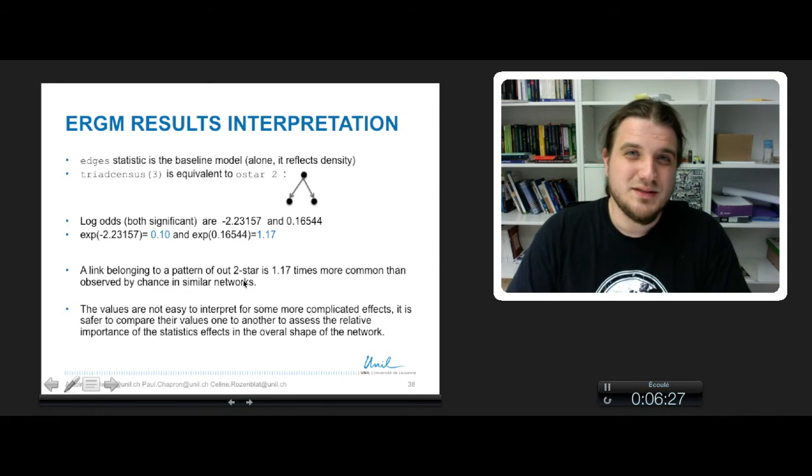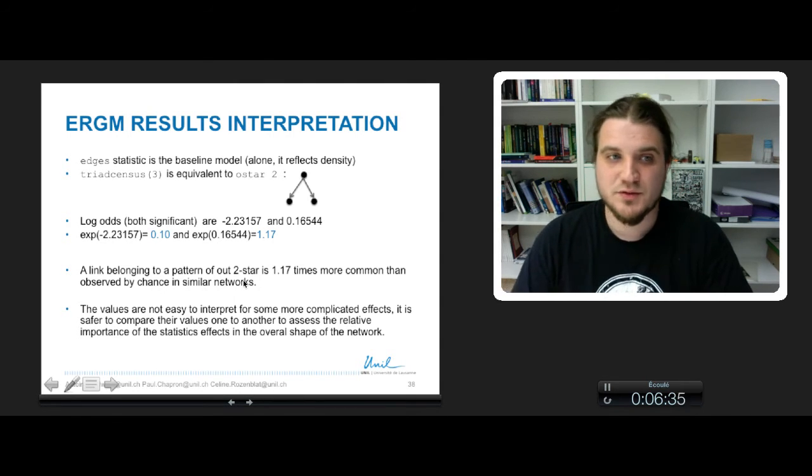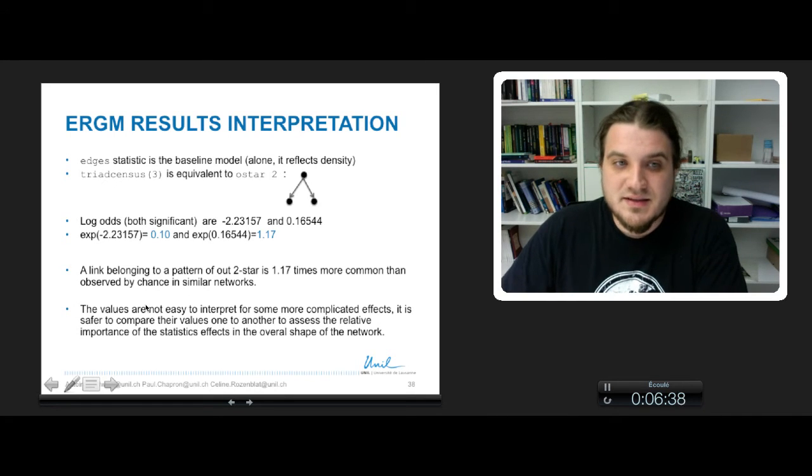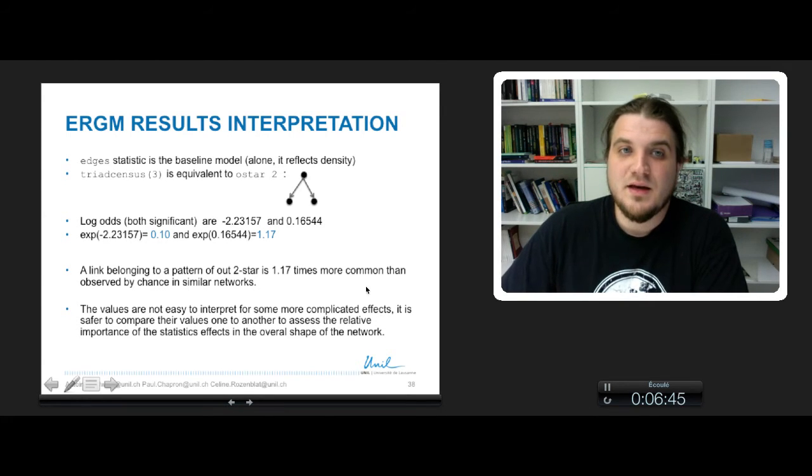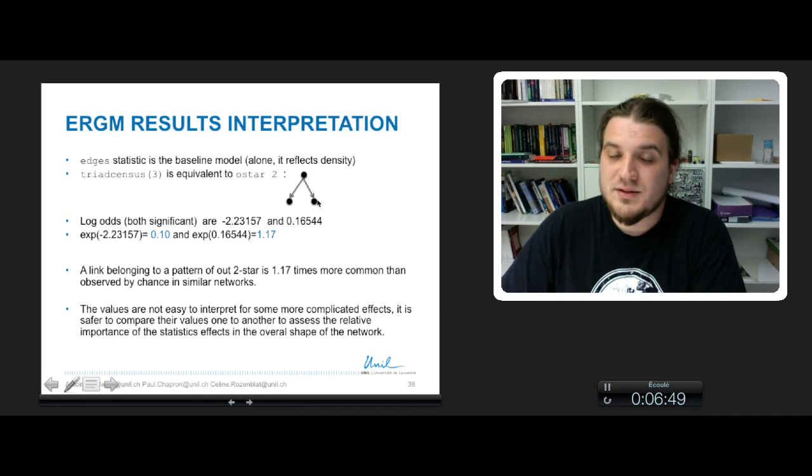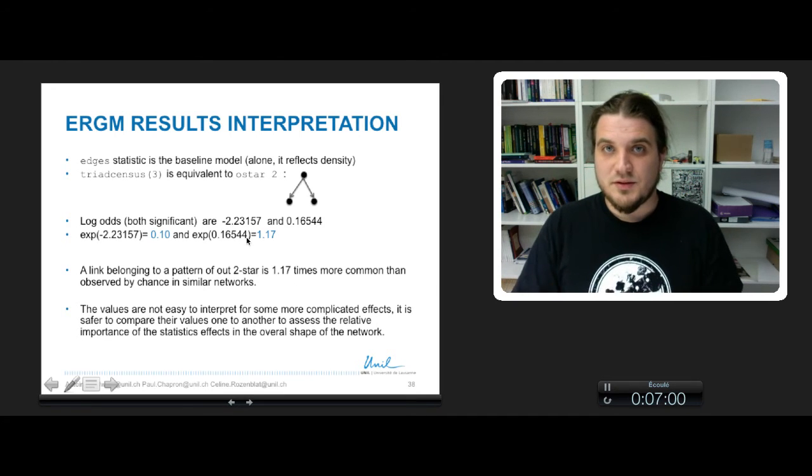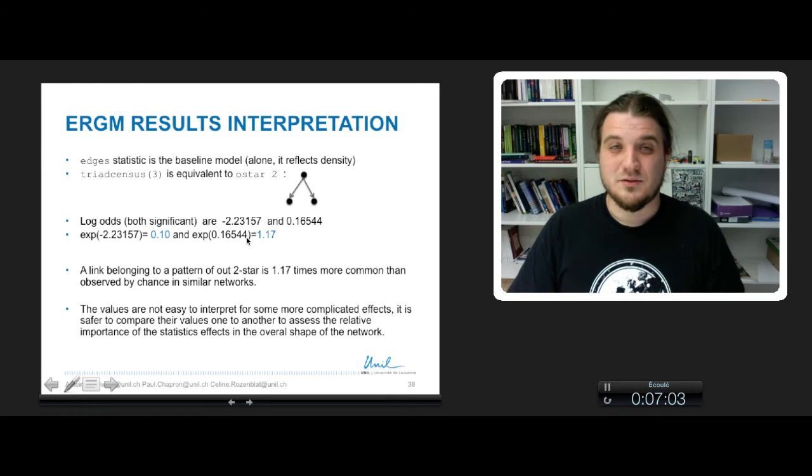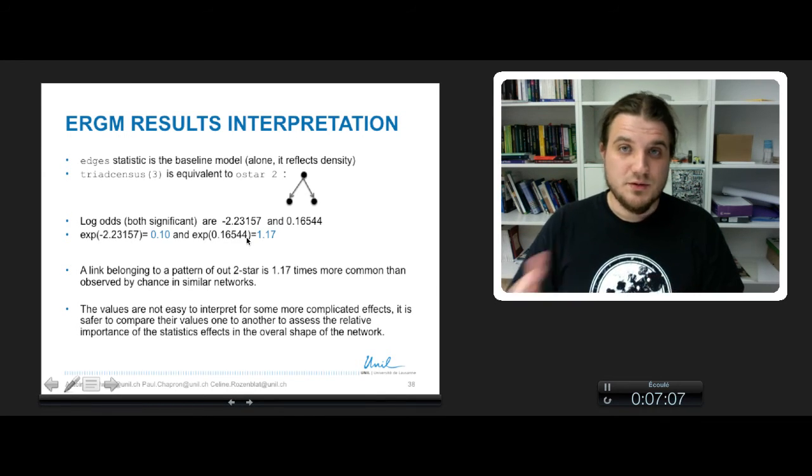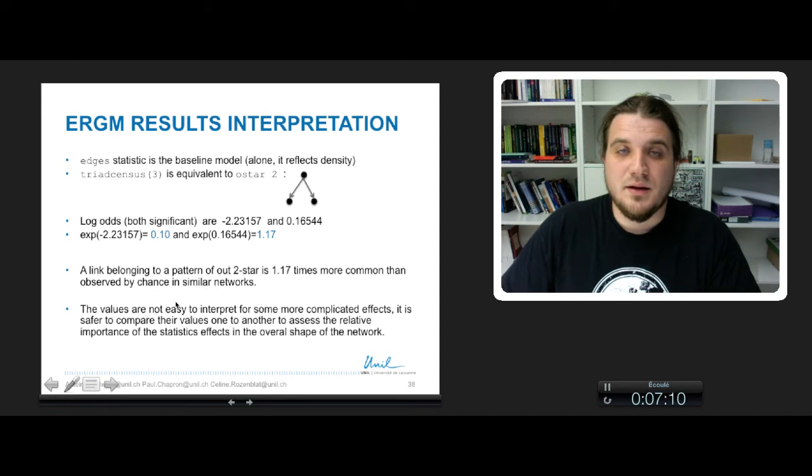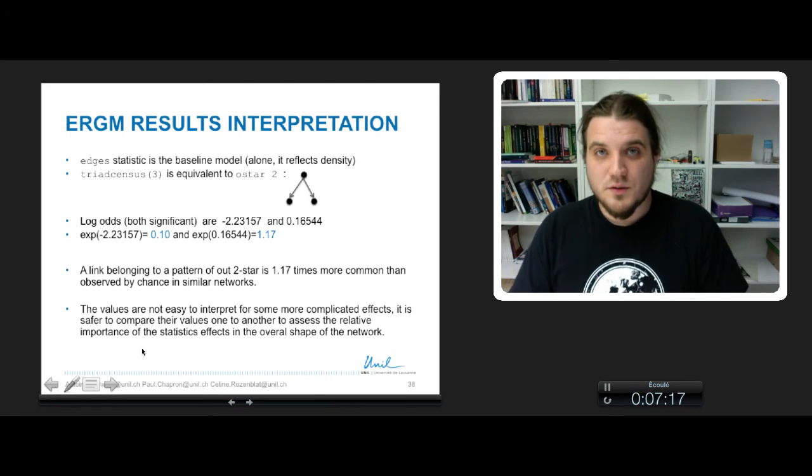But still, these values are quite tricky to get. The simplest way to deal with these values is that, since it's hard to interpret for some more complicated effects - in this case it was a little bit simple because 2-star is a simple pattern, but when you have distribution terms and so on, it's more difficult to see what it means - just compare the values to one another and see the relative pure effect of the terms compared to the values of the others. You will interpret them as their importance of the statistics on the overall shape of the network.